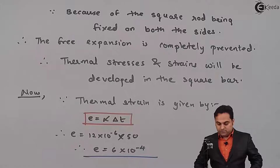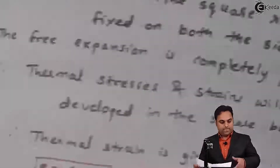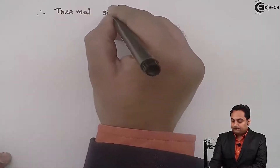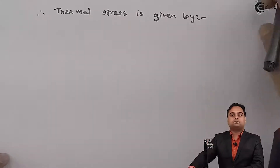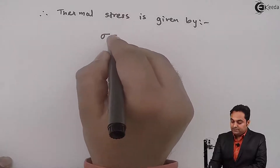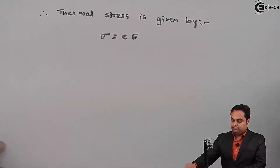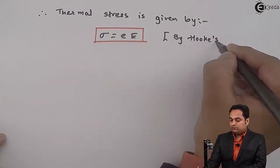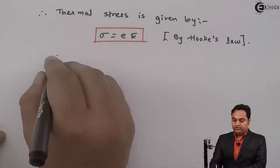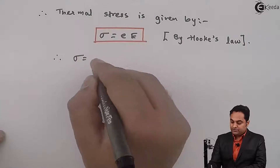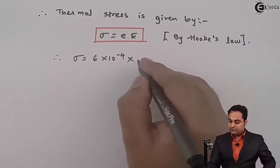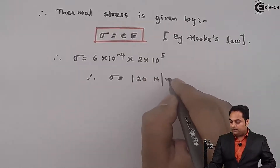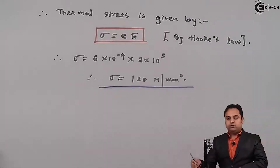Now after getting the thermal strain, I will find the value of thermal stress. The formula for thermal stress, derived from Hooke's law, is: σ = e × E (strain × Young's modulus). Therefore σ = 6×10⁻⁴ × 2×10⁵ = 120 N/mm². This is the thermal stress developed in the square rod, and it is compressive in nature.